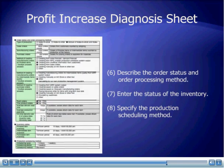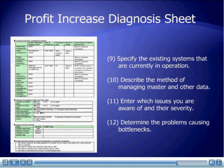6. Describe the order status and order processing method. 7. Enter the status of the inventory. 8. Specify the production scheduling method. 9. Specify the existing systems that are currently in operation. 10. Describe the method of managing master and other data. 11. Enter which issues you are aware of and their severity. 12. Determine the problems causing bottlenecks.